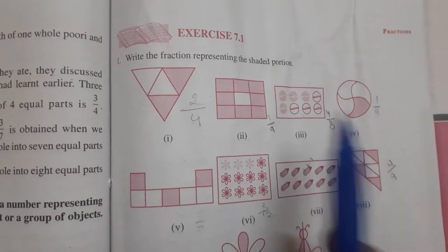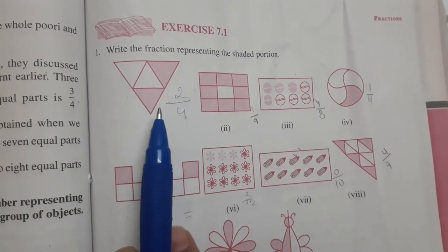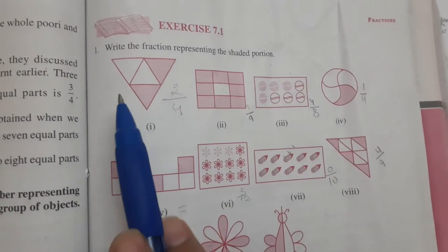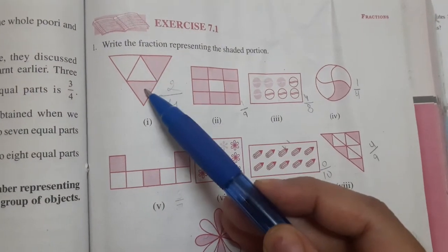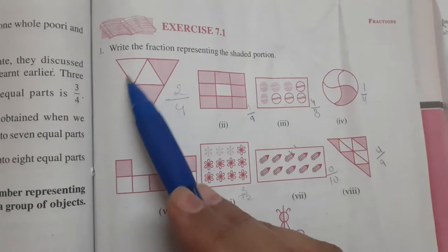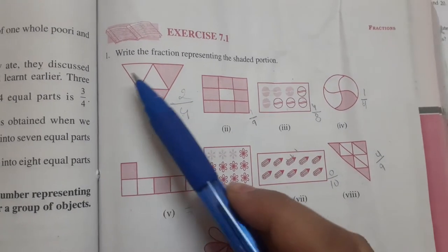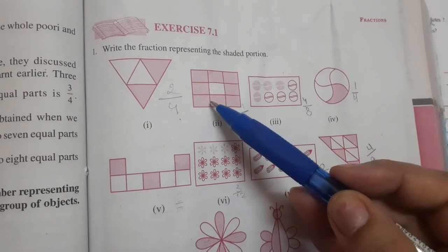Good morning children, today we are going to do exercise 7.1. In question number 1, you have to write the fraction representing the shaded portion. Look, this is a figure. Here 2 portions, 2 parts are shaded, and out of total 1, 2, 3, 4, out of 4 parts, 2 are shaded. So the fraction is 2 by 4.